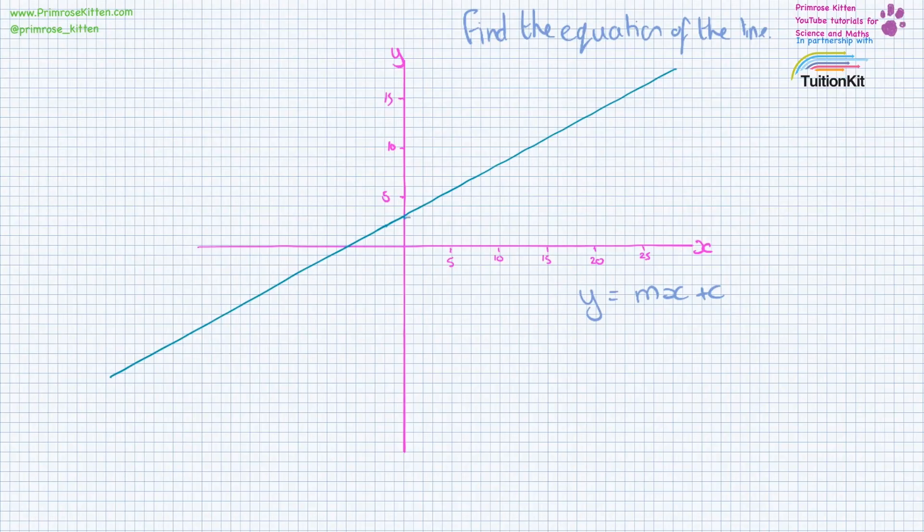We can see straight away that our y-intercept is here, so that's going to be 3, so that equals c. So we have y equals mx plus 3.